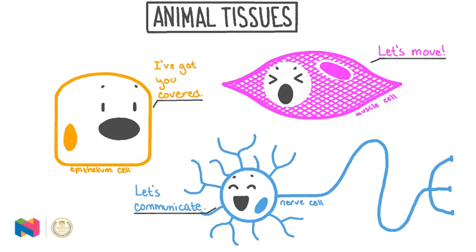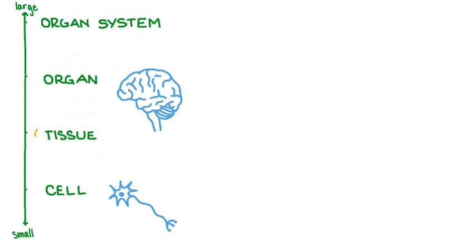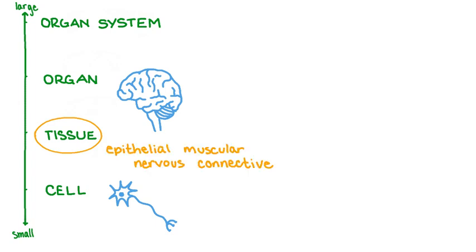In this video we will learn about the four major types of tissues found in animals. We'll learn about their functions and how those functions are supported by their structures. We'll take a look at examples of muscular, nervous, epithelial, and connective tissue, and how different tissues come together to make a functioning organ. A tissue is a group of cells that work together to perform a specific function.